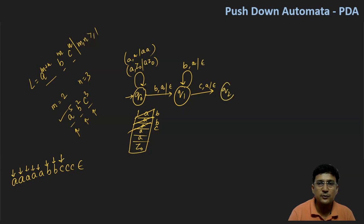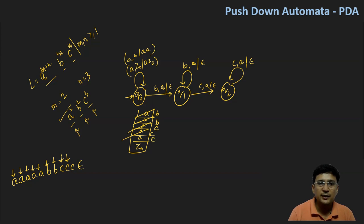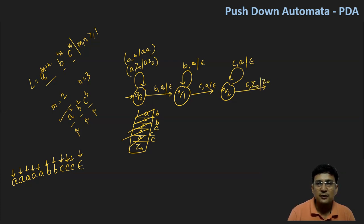We move to state q2. To pop a symbol, we replace the top symbol of the stack with epsilon. When we get epsilon on the input tape and the stack top is Z0, we move to the final state QF. So QF is the final state, and this is how we design the PDA.